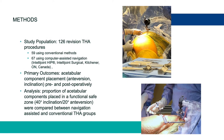The study included 126 revision total hip arthroplasty procedures: 59 using conventional methods and 67 using an imageless computer-assisted navigation system. All surgeries were performed by the authors, all of whom are high-volume revision total hip arthroplasty surgeons. Primary outcomes were assessed for acetabular component placement in both anteversion and inclination, measured preoperatively and postoperatively. Our analysis included the proportion of acetabular components placed in the functional safe zone, compared between the navigated and conventional revision groups.